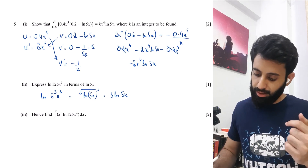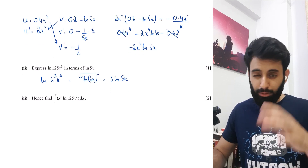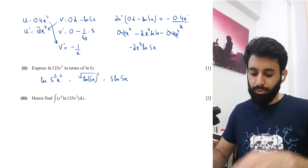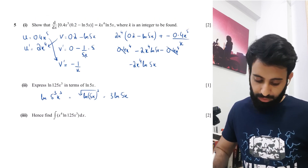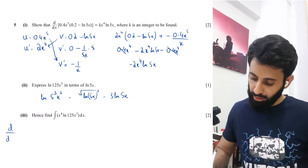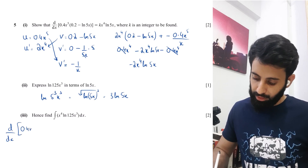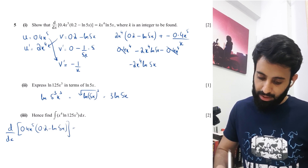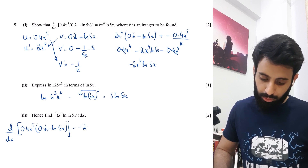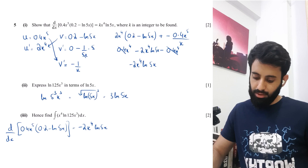Now part 3: find the integral of x^4·ln(125x^3). We're very close to this because we just found that the derivative of 0.4x^5(0.2 minus ln5x) equals minus 2x^4·ln5x.